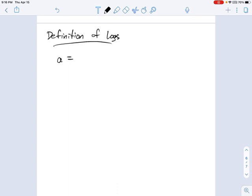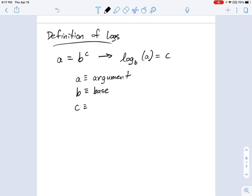If we have some exponential where a equals b to the c power, then what that means is the logarithm, base b, of a equals c. In this case, a is the argument, b is the base, and c is the exponent.